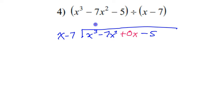So X times what is X to the third power? That should just be X squared. If I take that and distribute, X squared times X is X to the third power. X squared times negative 7 is negative 7X squared. Interesting.